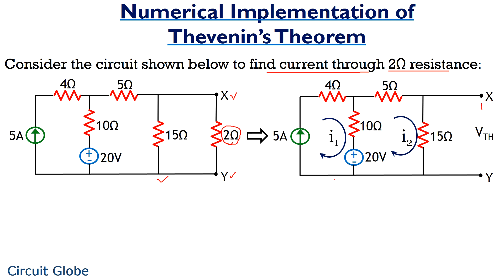Now we have to find Vth across the two open ends. To find Vth across this circuit we have to apply any network simplification technique like KVL or KCL, and in this circuit I am using KVL. As we can see, the circuit is composed of two meshes 1 and 2. It is clear from the figure that mesh 1 consists of a current source of 5 amperes. Therefore for mesh 1, the current I1 will be equal to 5 amperes.